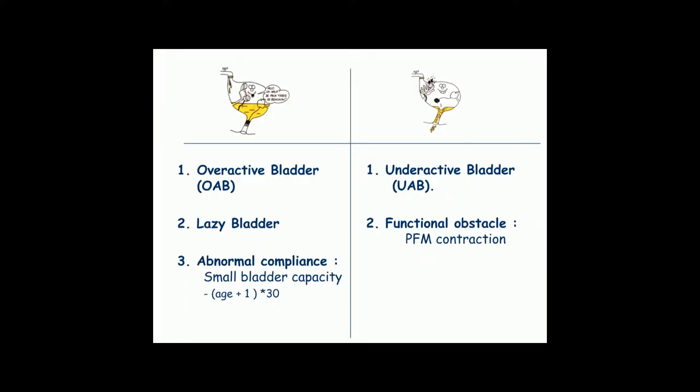If we categorize pathologies the same way as physiology — filling and emptying phases — during the filling phase we see overactive bladder (uninhibited contraction of the bladder muscle), a lazy bladder with excessive filling leading to high pressure, or a problem with compliance leading to small bladder capacity. Normal bladder capacity in children is age plus one multiplied by 30. During the emptying phase, we can have an underactive or completely lazy bladder, or a functional obstacle — the pelvic floor muscle contraction — which is a very important part of our work as physiotherapists: learning them how to relax it.